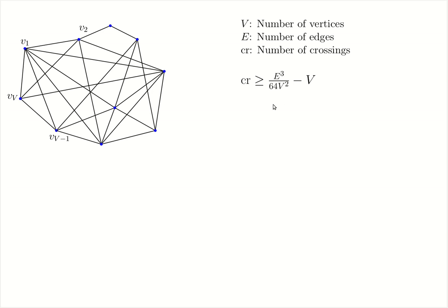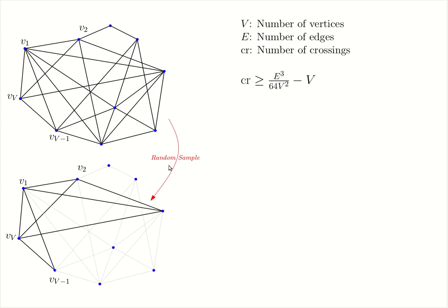The proof of this lemma uses a very interesting and beautiful randomized argument, and it goes as follows. We pick a parameter p, and we sample the vertices of this graph with probability p. In other words, for every vertex of the graph, we roll a dice or a coin, and we keep the vertex with probability p, and we delete it with probability 1-p.